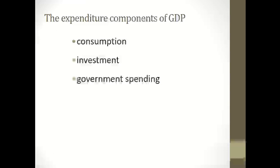Next we discuss the expenditure components of GDP. Recall the two definitions: summing all expenditures gives GDP, and summing all income of factors of production also gives GDP. The expenditure side of GDP has four components: Consumption, Investment, Government Spending, and Net Exports.